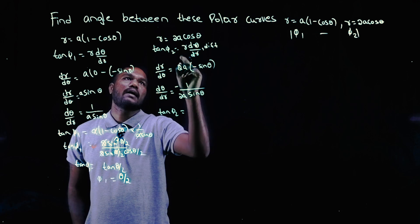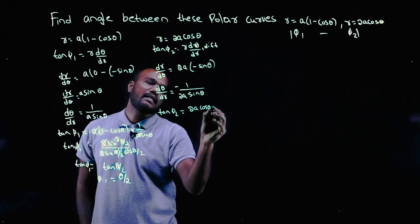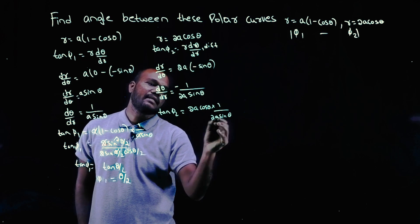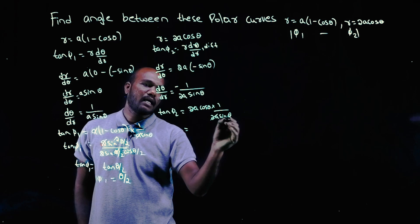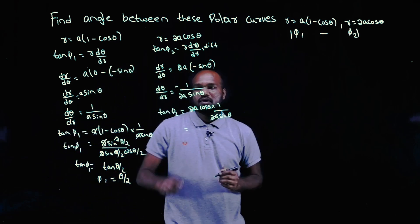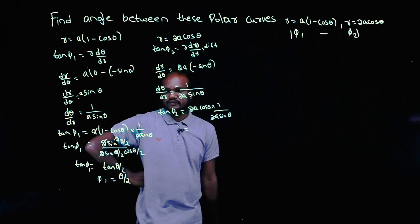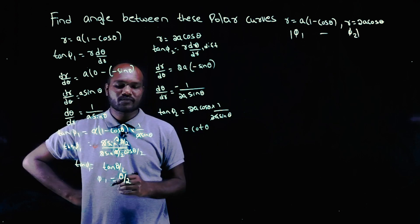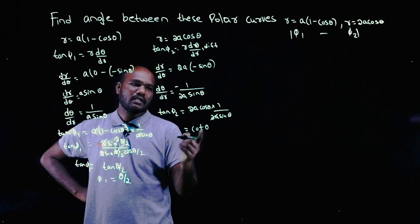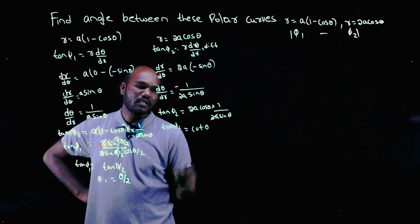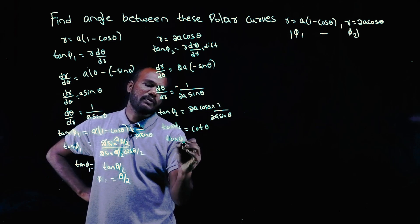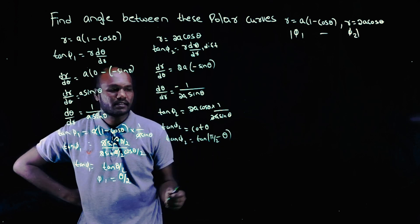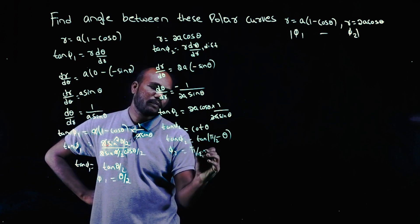Substituting into the formula: tan φ₂ = r · dθ/dr = 2a cosθ · 1/(2a sinθ). The 2a's cancel, giving cosθ/sinθ = cotθ. So tan φ₂ = cotθ = tan(π/2 - θ), which means φ₂ = π/2 - θ.